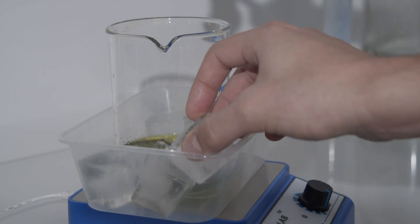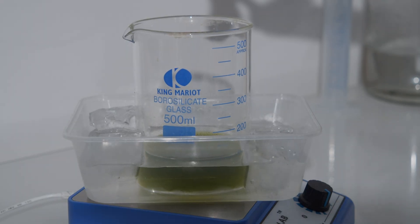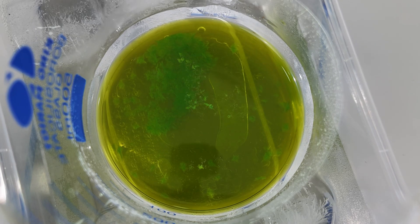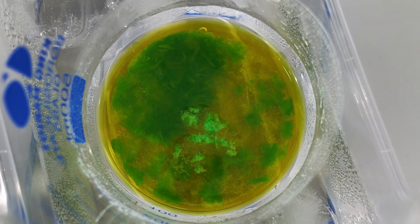Then I place the beaker into a plastic tray filled with ice water to cool it slowly. Beautiful green crystals of potassium ferroxalate began to appear.